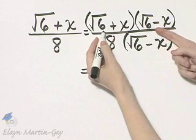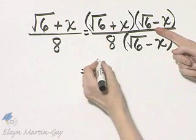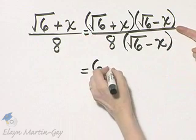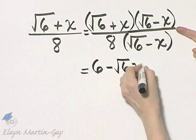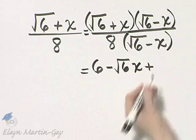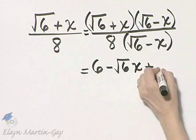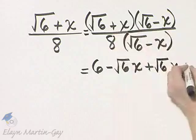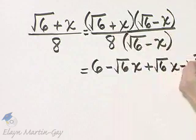Square root of 6 times square root of 6 is 6. The product of the outside terms, that's minus square root of 6x. Product of the inside terms, plus either x square root of 6 or square root of 6x. Either way. And then last times last, that's minus x squared.